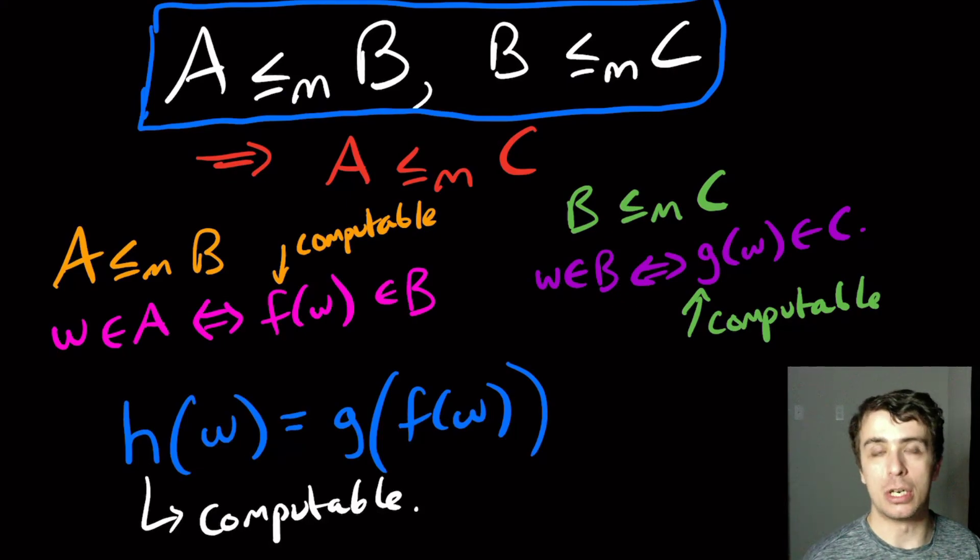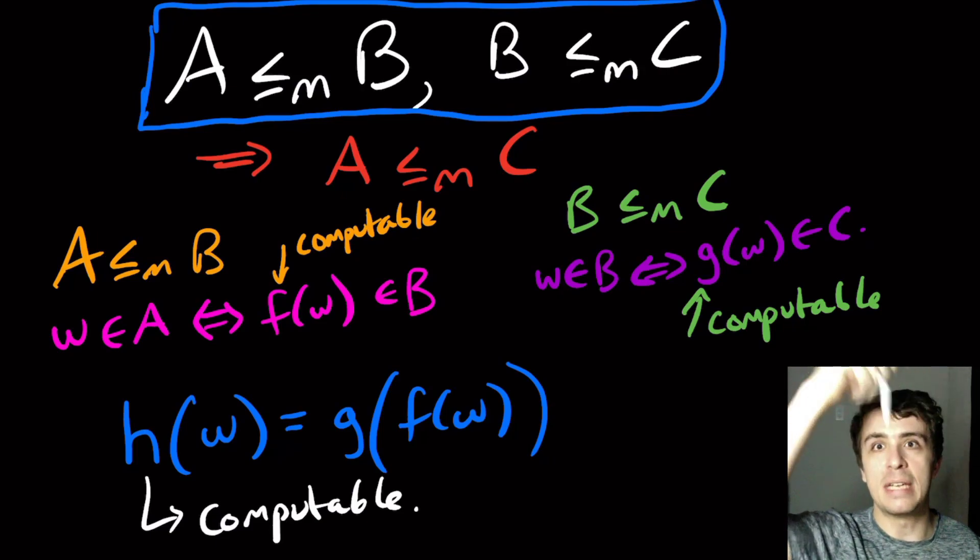So therefore, mapping reductions are transitive. So hopefully that was interesting. Leave comments about mapping reductions and their transitivity in the comments down below.